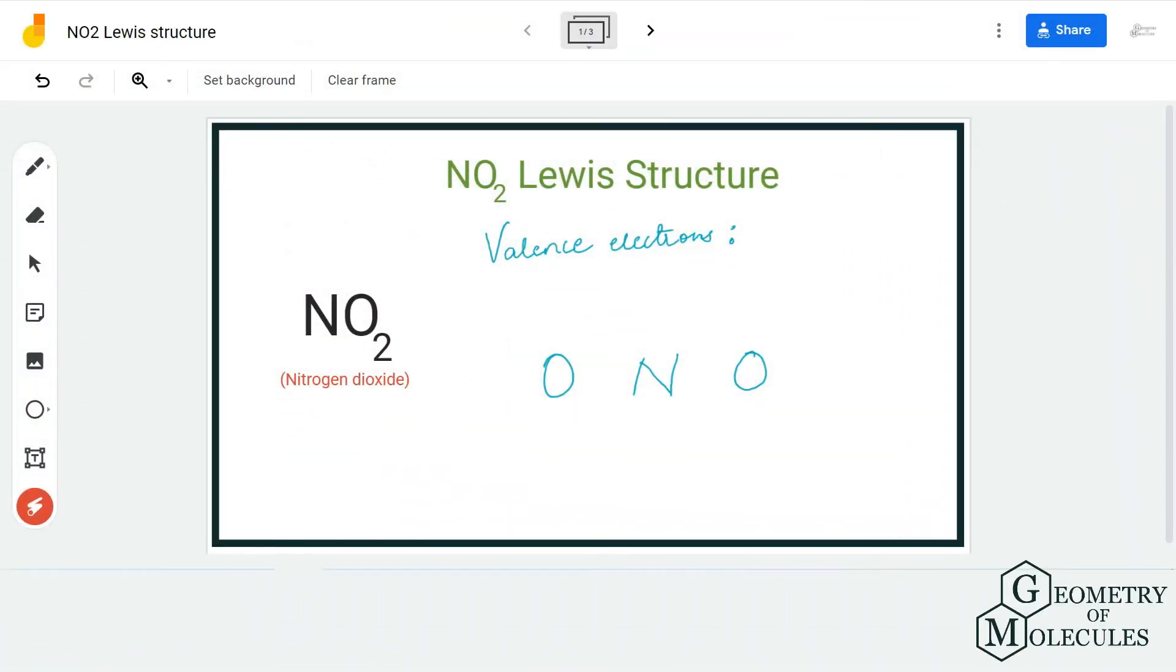Hi guys, welcome back to our channel. In today's video we are going to help you determine the Lewis structure for NO2, the chemical formula for nitrogen dioxide. To determine its Lewis structure we need to know the total number of valence electrons for this molecule.